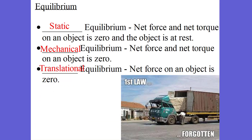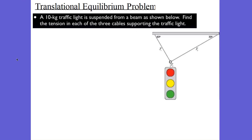The last one is what we call translational equilibrium. Translational equilibrium is the net force on an object which is zero. Let's take a look at a translational equilibrium problem. We have a traffic light hanging, suspended from two different chords. We're going to call one of the chords T1 and one of the chords T2, and we have to make sure we take a look at its free body diagram in all cases.